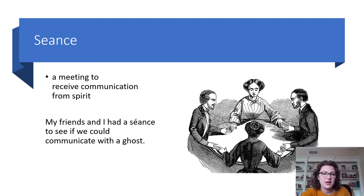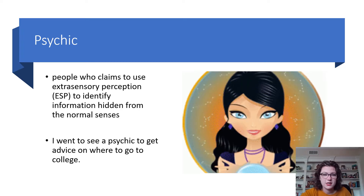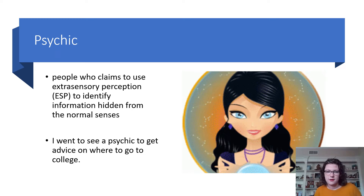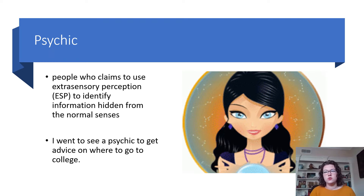A seance is a meeting to receive communication from a spirit. Example: My friends and I had a seance to see if we could communicate with a ghost. A psychic is a person who claims to use extrasensory perception or ESP to identify information hidden from the normal senses — basically someone you might go to who reads your palm, looks into a crystal ball, or does a tarot card reading. Example: I went to see a psychic to get advice on where to go to college.